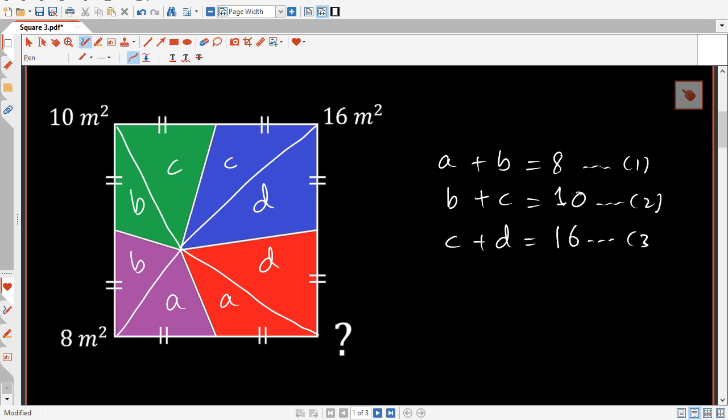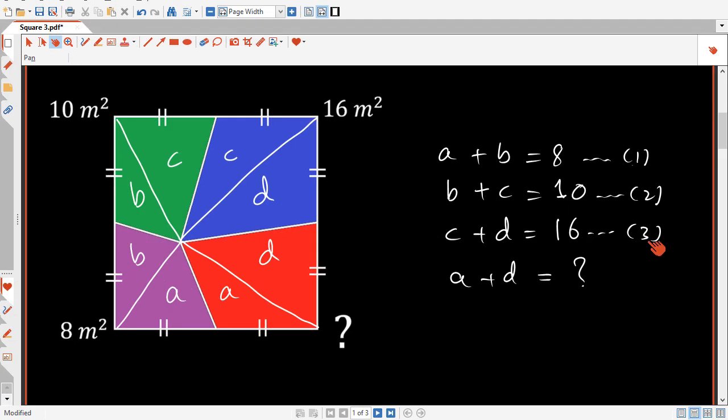And that's the third equation, and we want to solve for a plus d here. So a plus d is unknown and we want to solve for that. Now to solve for a plus d, what we're going to do is subtract equation number 2 from equation number 1.